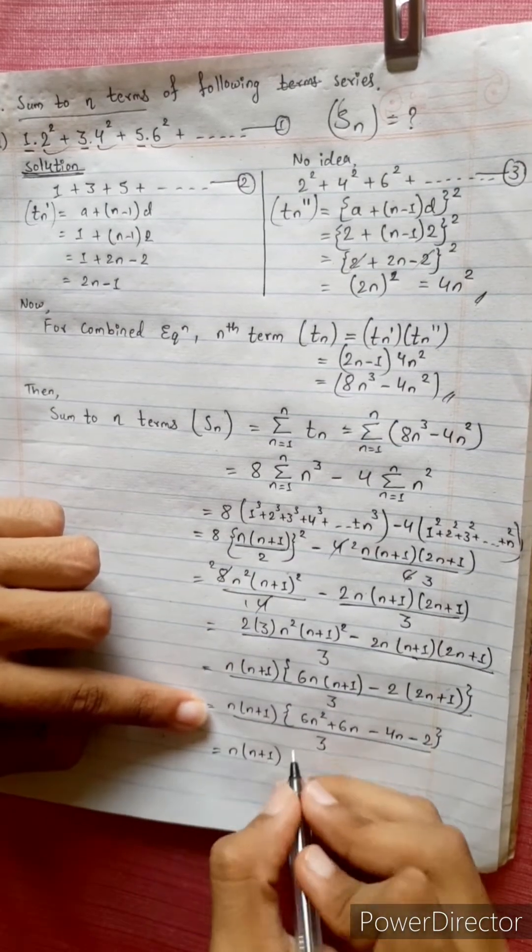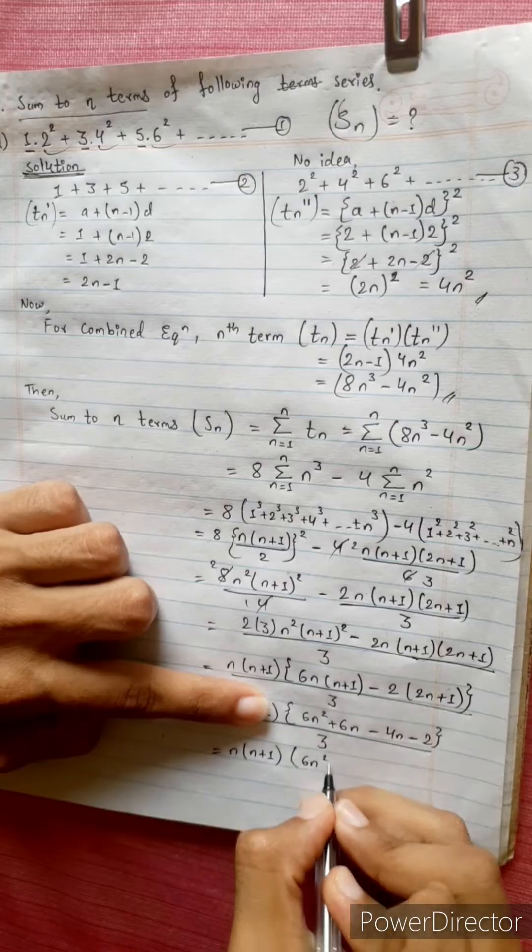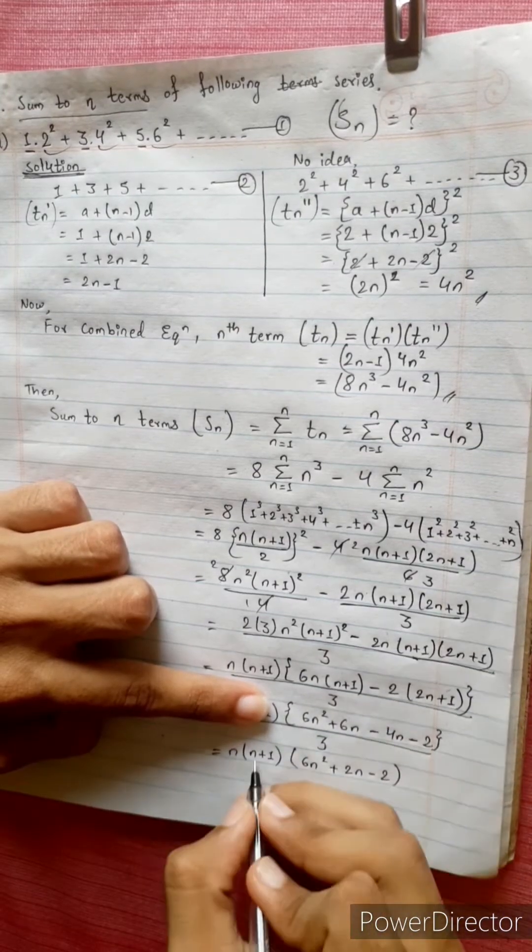n times n plus 1 times 6n square plus 2n minus 2 divided by 3. Let's check the answer.